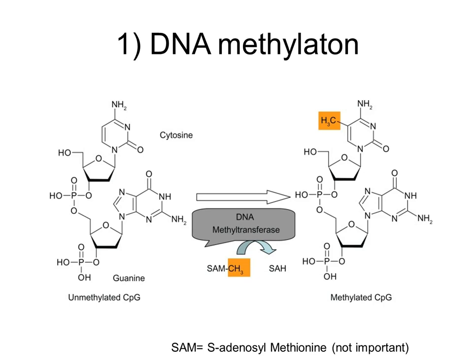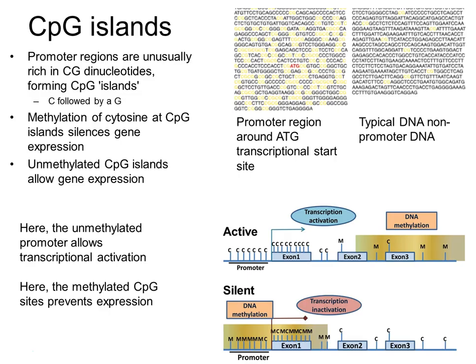DNA is methylated by adding a methyl group to cytosine. The enzyme responsible is DNA methyltransferase, which tags the methyl group onto the cytosine base. CpG islands are essentially a cytosine followed by a phosphodiester bond then a guanine. C followed by G is actually not rare but is underrepresented in the genome.